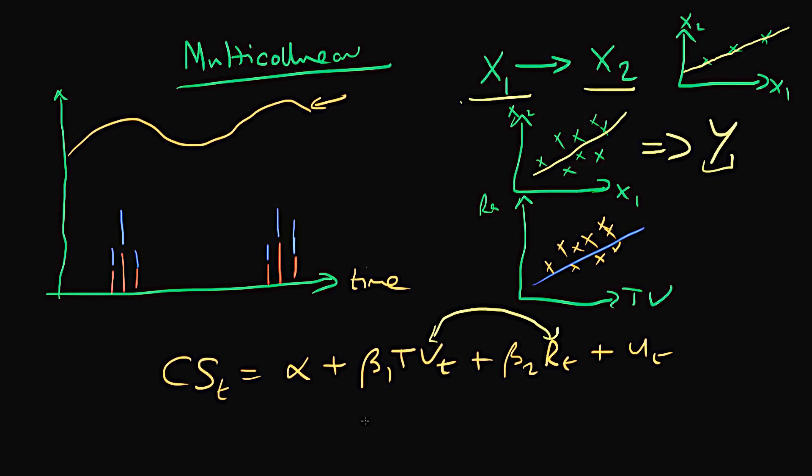In our least squared estimates of beta 1 and beta 2, we will actually find that even though we might have a high R squared for our regression, we might have an R squared value which was equal to 0.9, so our model might explain 90% of the variance in the company sales over time. We might find that individually TV or radio was, on their own, statistically insignificant.